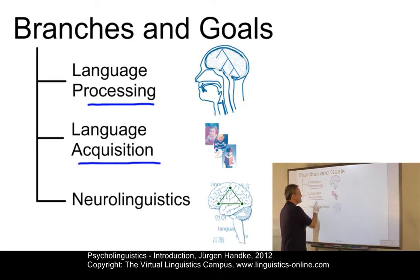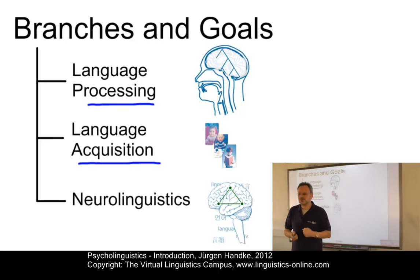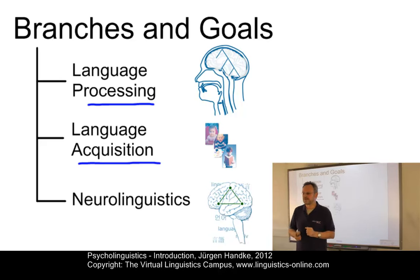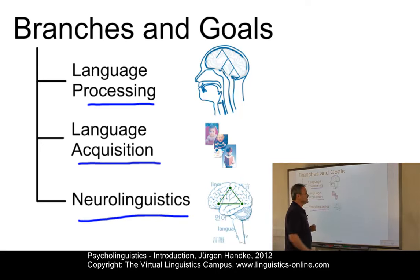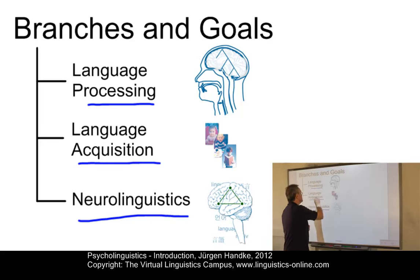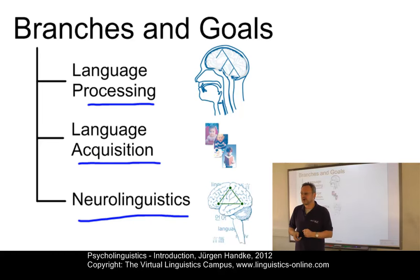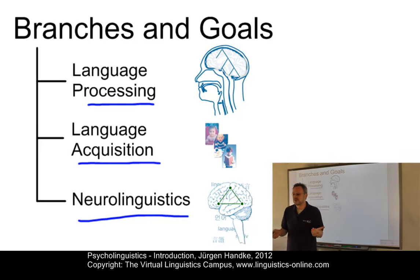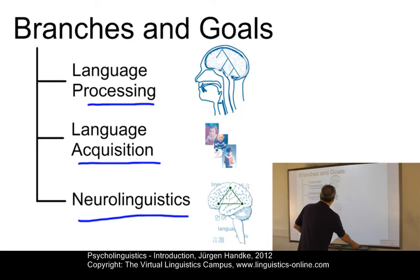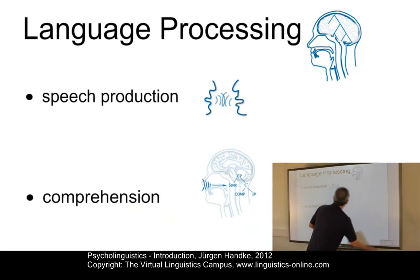In language acquisition, we're looking at young children and ask the question: how do they learn to speak? How does a child acquire his mother tongue? And last but not least, in neurolinguistics, we are no longer concerned with the human mind, but with the physical counterpart of the mind — the human brain — and the central question is how language is represented in the human brain. So these are the main branches of psycholinguistics. Let's now look at them in more detail.